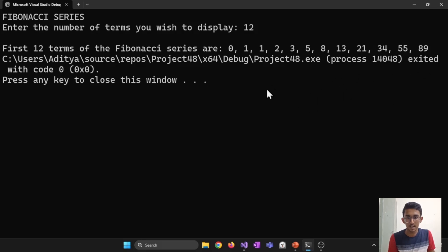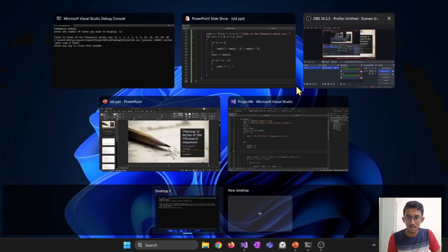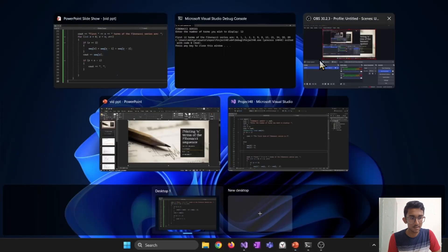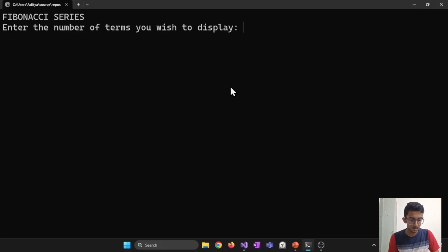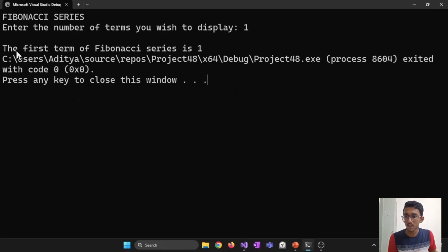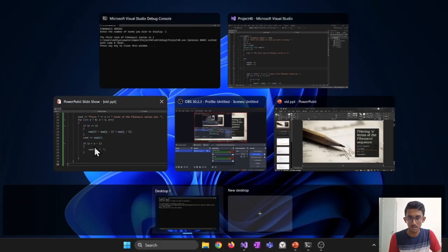So this code is good and running. Also let's try for this special case. We also have a special case of n equal to 1. Let's try for that also. Yes, I get the output, the first term of the Fibonacci series as well. So the code is perfect and running.